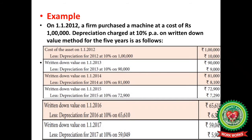Here is an example: on 1st January 2012, a firm purchased a machine at a cost of Rs 1 lakh. Depreciation is charged at a rate of 10% per annum on the written down value method for 5 years. In the first year, the cost of the asset is Rs 1 lakh; 10% of 1 lakh is Rs 10,000. After deducting depreciation from the cost of the asset, the balance becomes Rs 90,000.